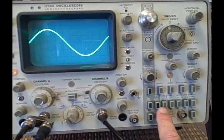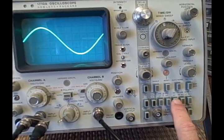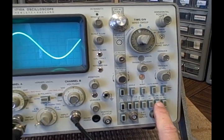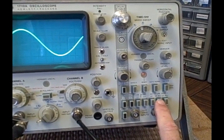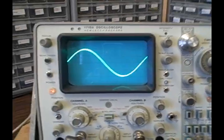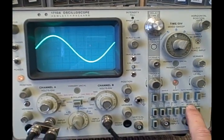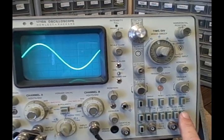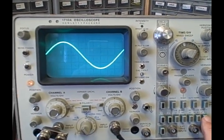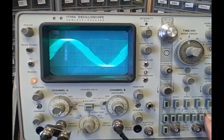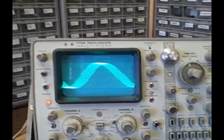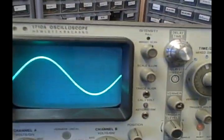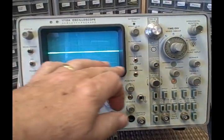We have DC or AC coupling for the trigger. We can go to line sync. We have high frequency reject or low frequency reject. So if we're having interference from high frequencies, we could hit that button and clean it up. Or if we're looking at high frequencies and we got audio that's distorting it, we can filter that out with the low frequency reject. Let's take that off. We're going to demonstrate the calibrator for the probe.